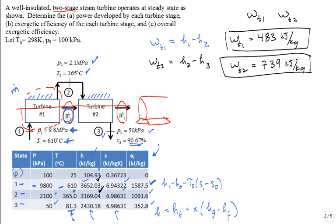How about part B? What is the exergetic efficiency of each turbine stage? So we want maybe, what symbol do we want to use for that? Maybe an epsilon, T1, maybe an epsilon, T2. Exergetic efficiency for the first turbine stage and the second turbine stage.